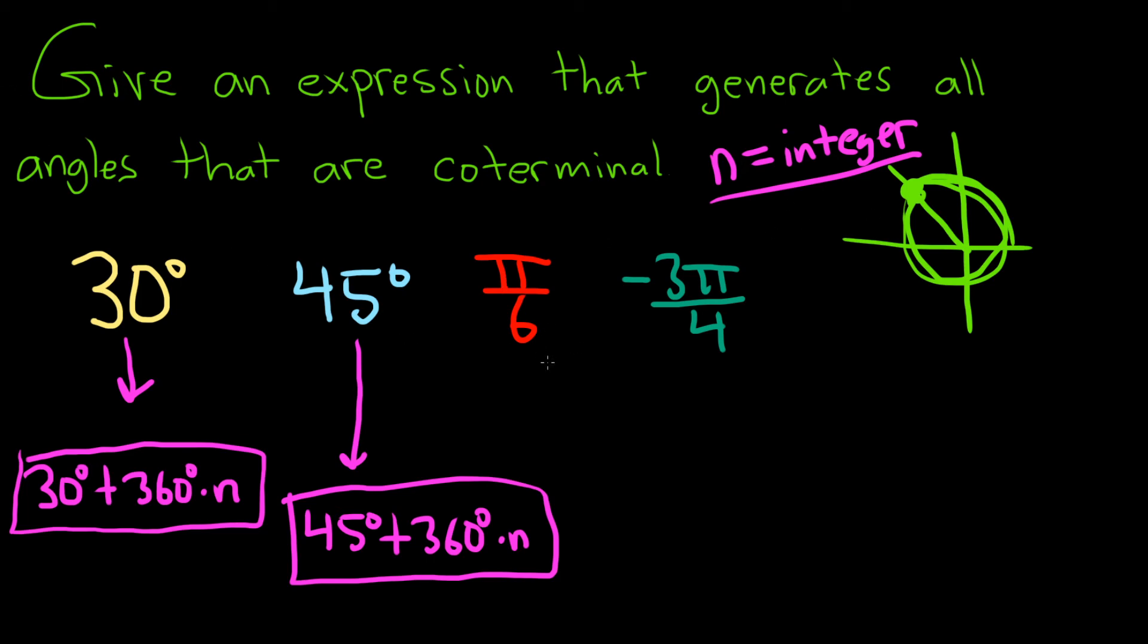Here it's a bit different. These are in radian measure. So here it'll be π/6 + 2nπ, or 2πn. Because you can add 2π any number of times. That would be the answer there.